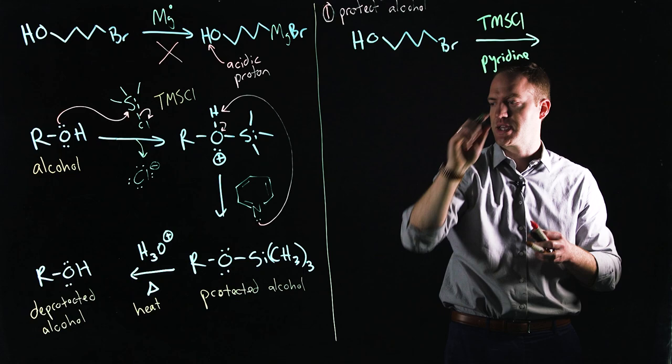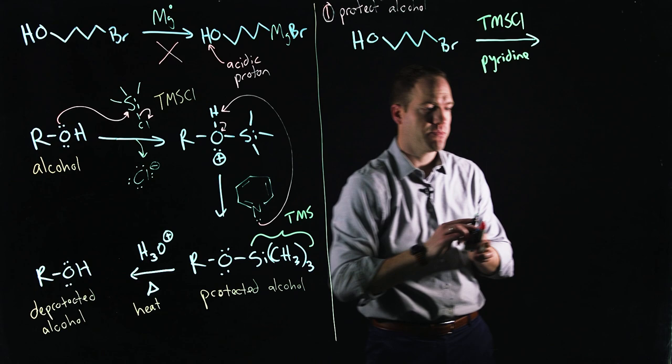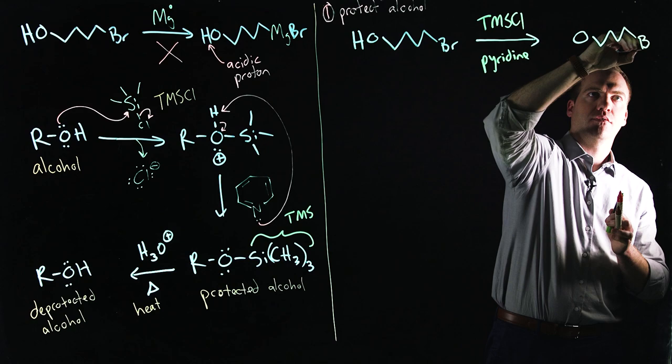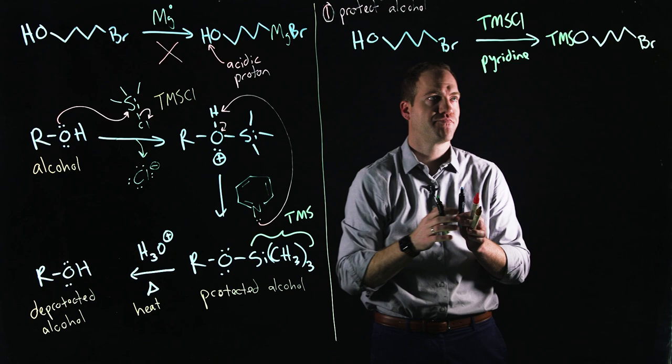Which is going to take our deprotected alcohol and turn it into a protected alcohol. So again, I'm sorry, I forgot to show you earlier. This group can be written as TMS. So you'll see me abbreviate that over here as the oxygen. The bromine's still attached, but I will write trimethylsilyl. Oxygen attached to a silicon with three methyl groups coming off of it. Looks like this. Looks like that. This is our protected alcohol.